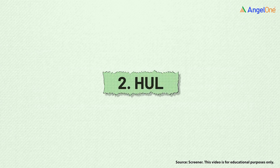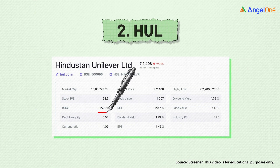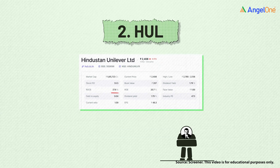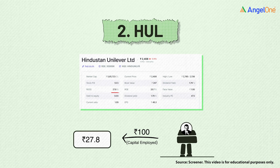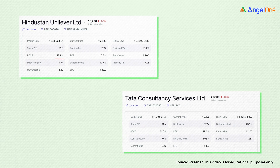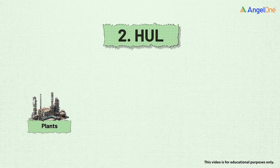Next, let's look at HUL. Its ROCE is around 27.8%, which means for every 100 rupees it invests in its business, it earns about 27.8 rupees in profit before interest and tax. That's pretty solid, but if you compare it with TCS, you'll notice HUL's numbers look relatively lower.